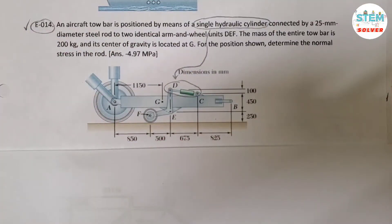An aircraft tow bar is positioned by means of a single hydraulic cylinder connected by a 25mm diameter steel rod to two identical arm and wheel units DEF. The mass of the entire tow bar is 200kg and its center of gravity is located at G. For the position shown, determine the normal stress in the rod.